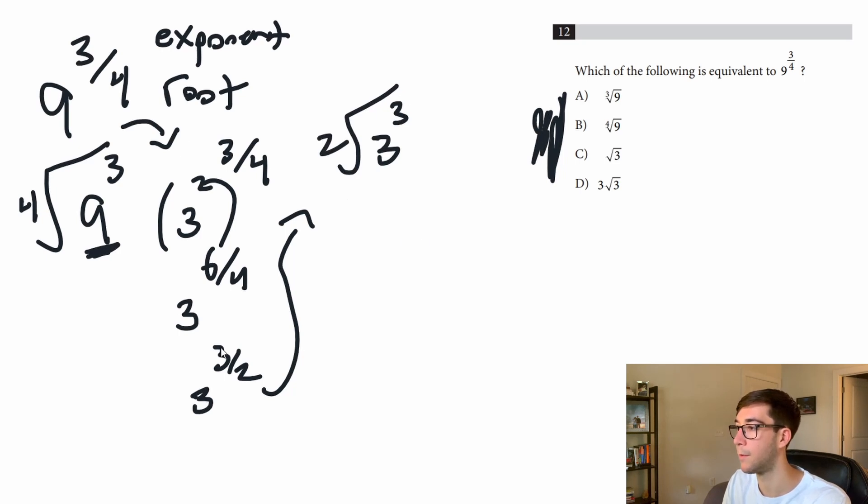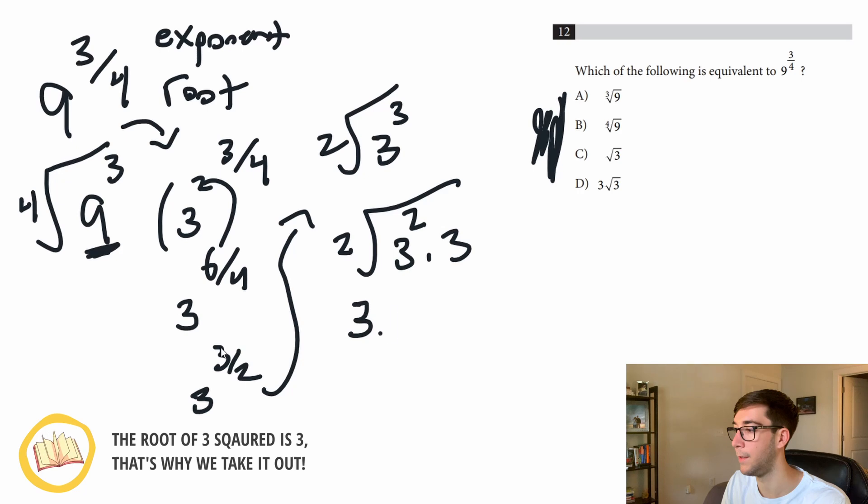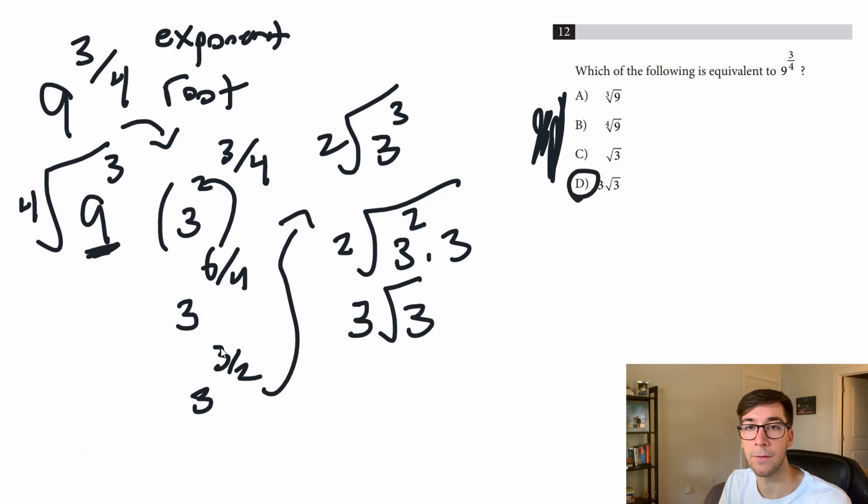Let's break this out more. 3 cubed is 3 squared times 3. So we have a perfect square, so we can take that out. We get 3 root 3 and D is our answer.